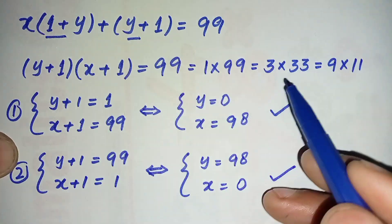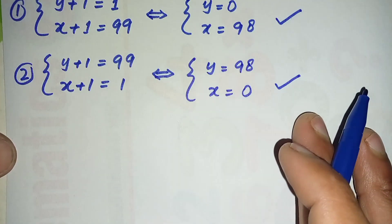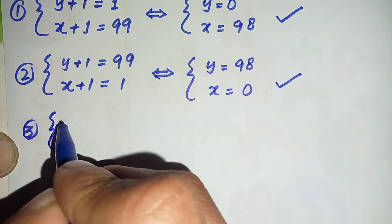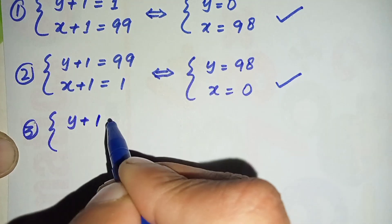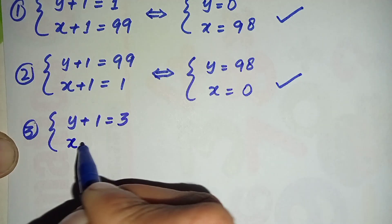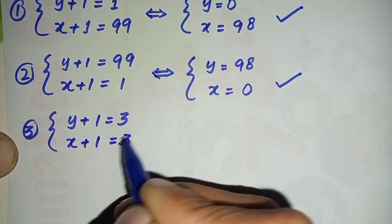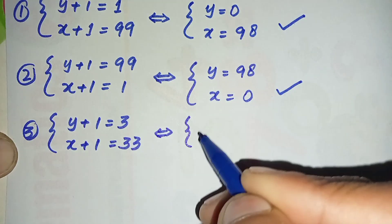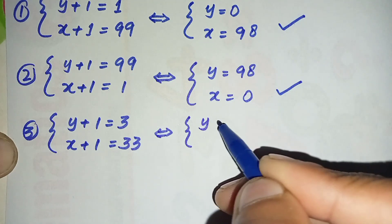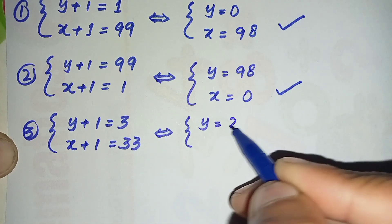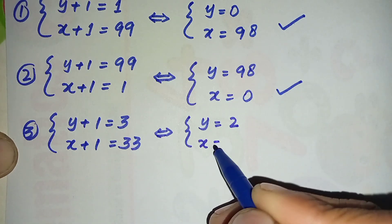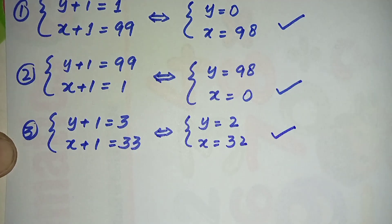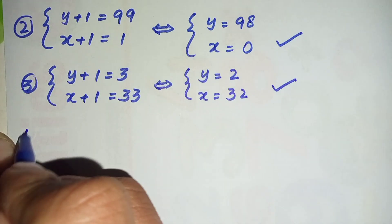For the third pair, we compare (y + 1) = 3 and (x + 1) = 33. From here we get y = 3 − 1 = 2 and x = 33 − 1 = 32. So our third pair of solutions is (x, y) = (32, 2).